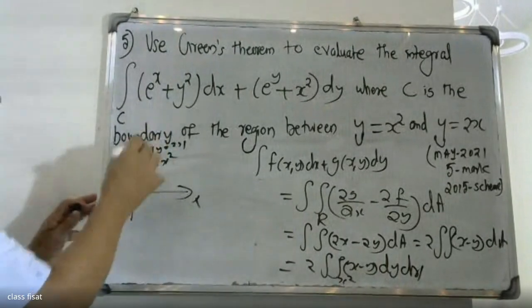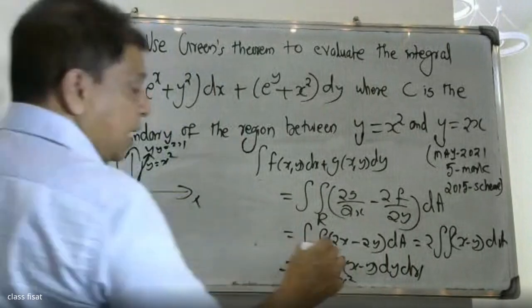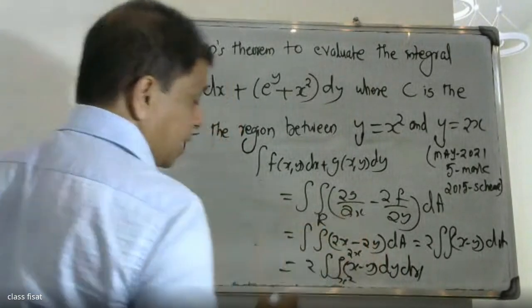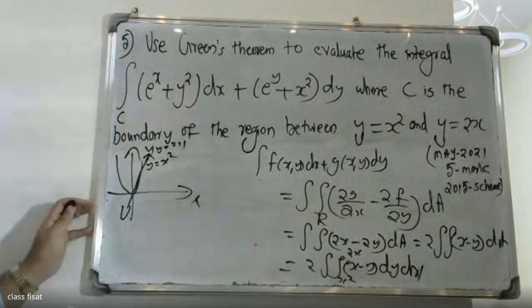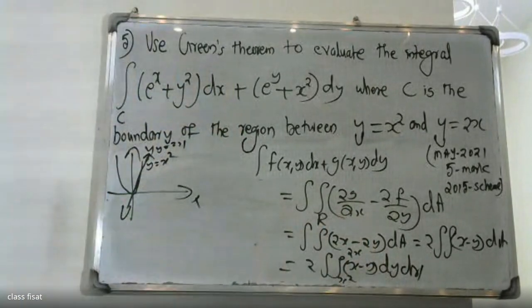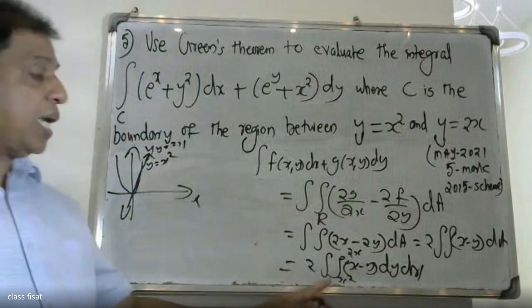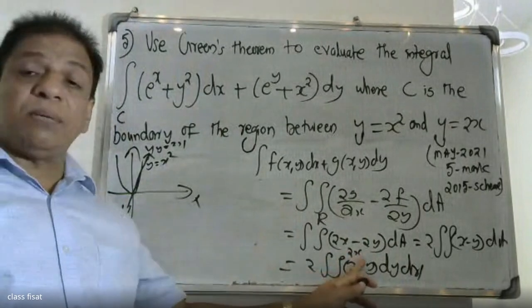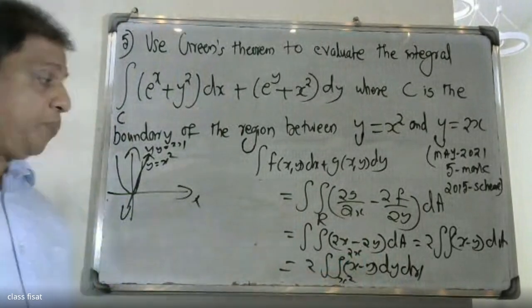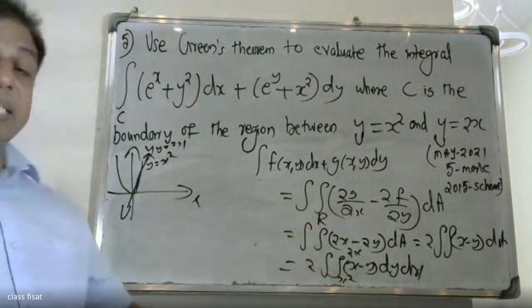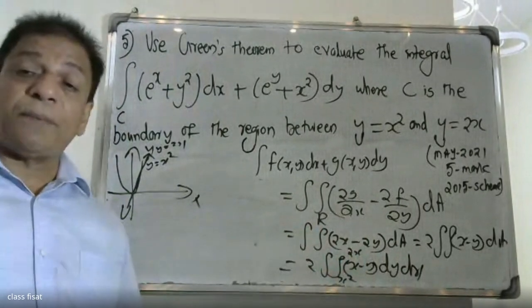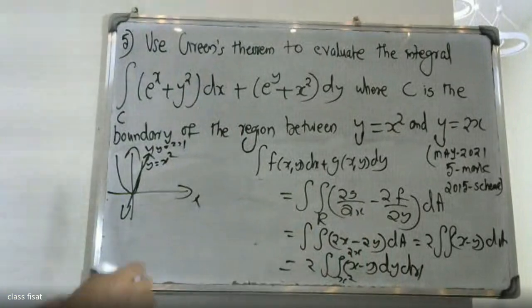The line is y equal to 2x. The upper limit for y is 2x and the lower limit for y is x squared. For x, the lower limit is 0 and the upper limit is 2.